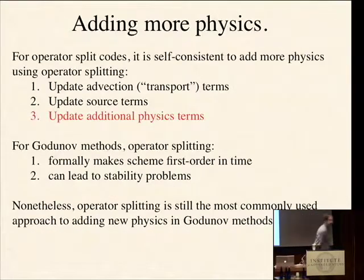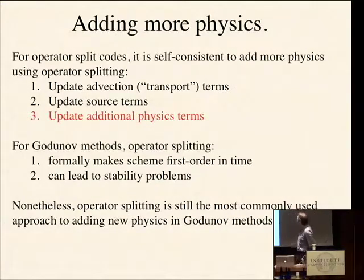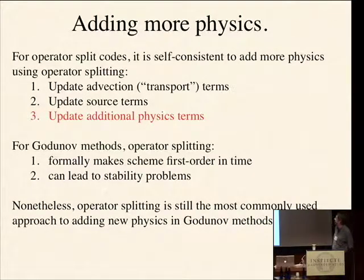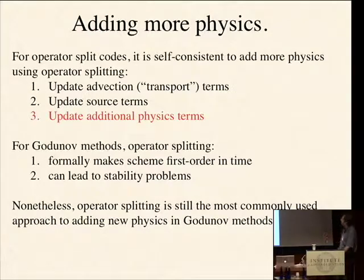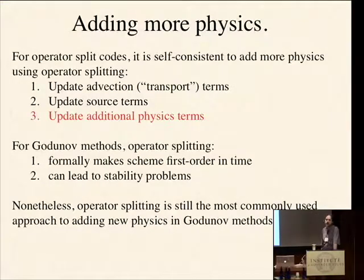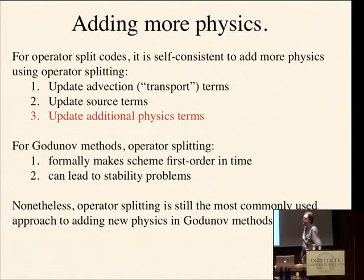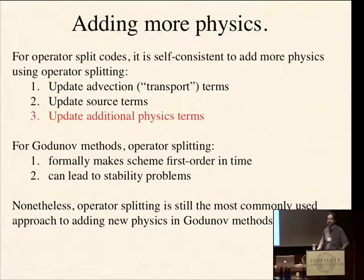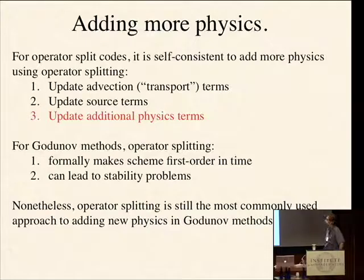We've discussed two kinds of codes. One was operator split techniques, for which it's perfectly self-consistent to add more physics using operator splitting — consistent with the underlying integration algorithm. The steps include breaking off advection or transport terms into the transport step, then updating source terms in the source step. If you add more physics, you'd add a third step — additional source terms associated with whatever physics you want to study — which is entirely consistent with the underlying integration algorithm.